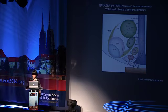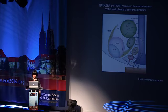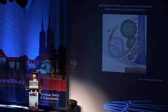NPY/AGRP neurons are generally called orexigenic because if you give NPY to rodents in the brain they will start eating crazily. If you delete AGRP they stop eating and actually die. If you delete POMC or the MC4 receptor — which receives alpha-MSH, the product of POMC neurons — the individual becomes obese, and there are also MC4 mutations in humans.